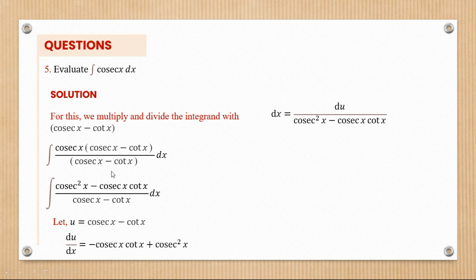As you can see right there, we can rearrange this into cosec squared x minus cosec x cot x. That doesn't change the meaning.